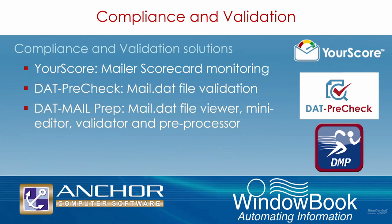Regardless of how powerful your pre-sort software is, people are human and can make mistakes. Things can change from the time the pre-sort is performed to the time the mailing is ready to be submitted. Window Book offers solutions to validate mail.dat files before the job goes into production and before it's submitted to Postal 1. The YourScore service automatically grabs your mailer scorecard data and delivers it to your email inbox each day, with a color-coded alert: green means good, yellow means warnings or approaching error thresholds, and red means you've exceeded error thresholds.